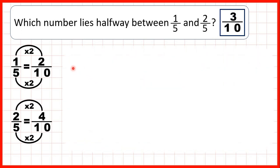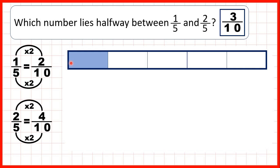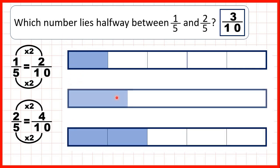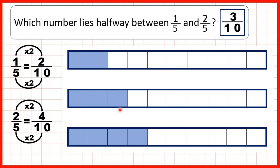We can show fraction bars for one-fifth and two-fifths, and we wanted the number halfway between them, so we can show a fraction bar and you can see what's shaded is halfway between our top and bottom fraction bars. That's three-tenths, and the way we found that was we changed one-fifth into two-tenths and two-fifths into four-tenths, so we could see that three-tenths was right in the middle.